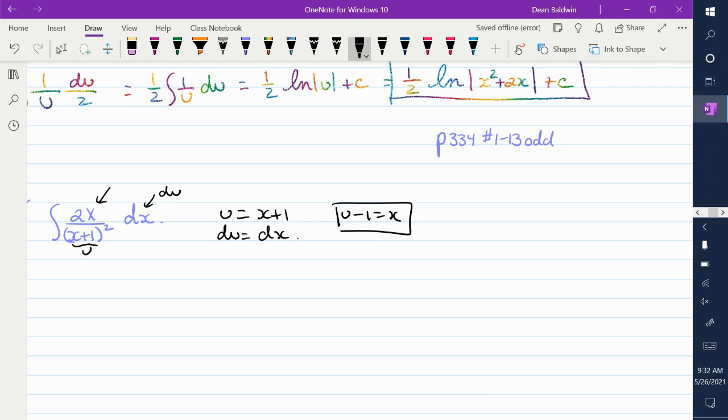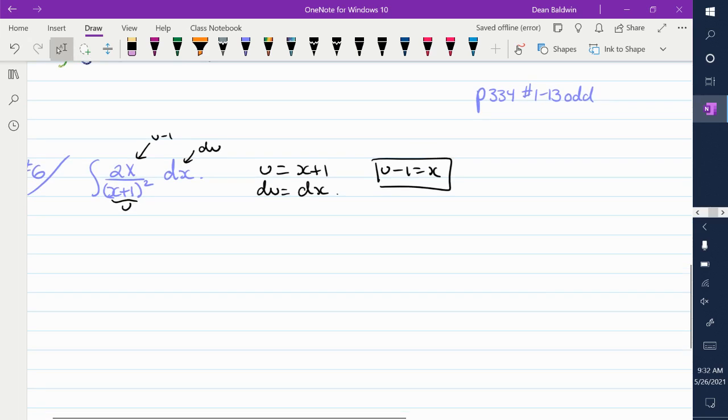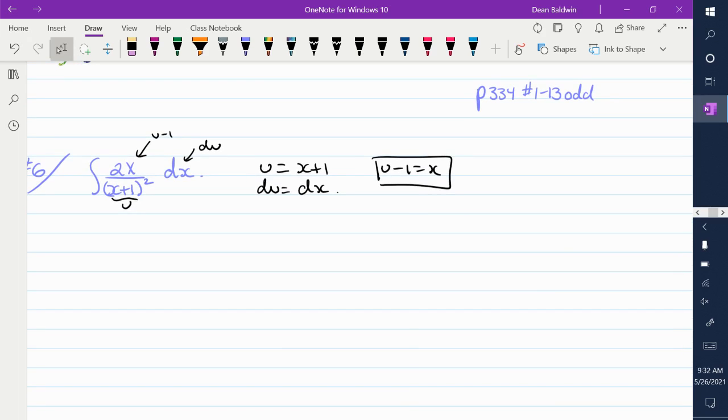So that is right there. Now, the 2 I can pull outside if you want. So my integral is now 2 times u minus 1 over u squared.